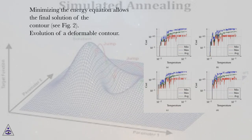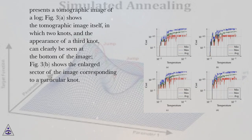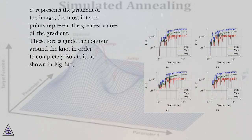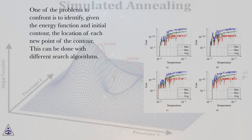The evolution of a deformable contour is presented on a tomographic image of a log. Figure 3a shows the tomographic image itself, in which two knots and the appearance of a third knot can clearly be seen at the bottom. Figure 3b shows an enlarged sector corresponding to a particular knot. Figure 3c represents the gradient of the image, where the most intense points represent the greatest gradient values — these forces guide the contour around the knot.